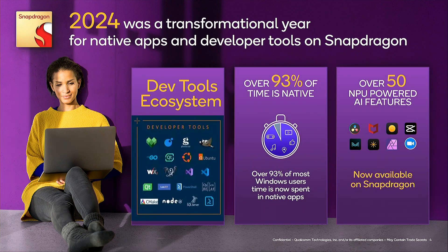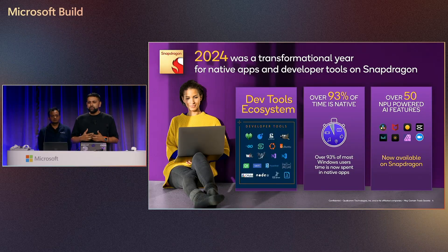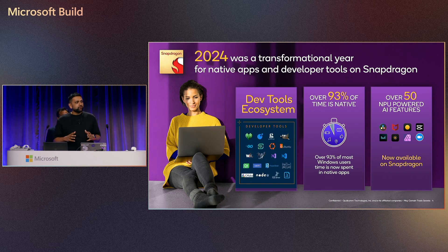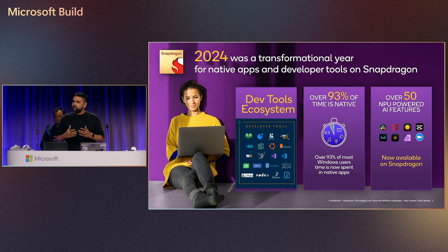Coming to 2024, it was a transformational year for native apps and developer tools on Snapdragon. To start off with the developer tool ecosystem, a lot of your favorite apps — such as Qt, Visual Studio, or Unreal Engine — have been made native, so you get the best developer experience on our platform. What we also found out is that people using our platform are using these native apps 93% of the time, making the best use of our platform. Along with that, today we have 50-plus NPU-powered AI features that are in production and running smoothly on Windows on Snapdragon. The developer ecosystem has evolved over the past two years, and this is the right time for you to start developing on our platform.